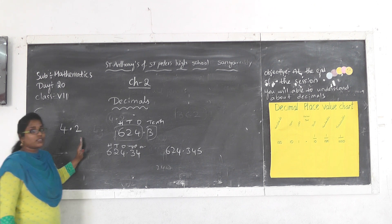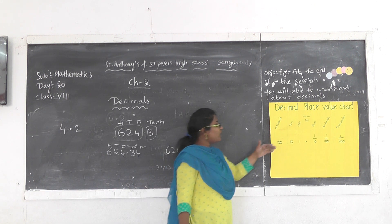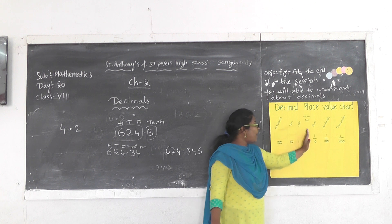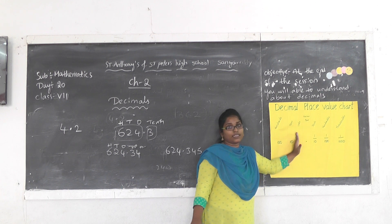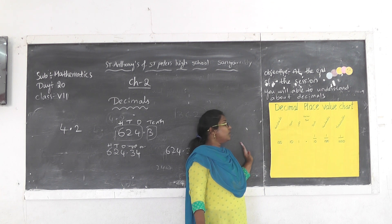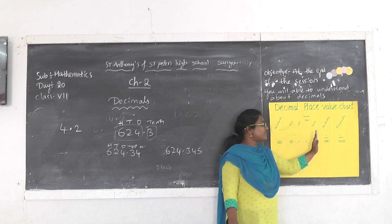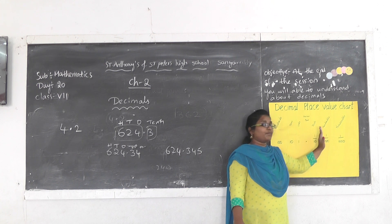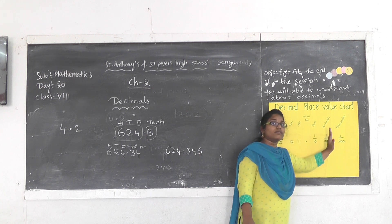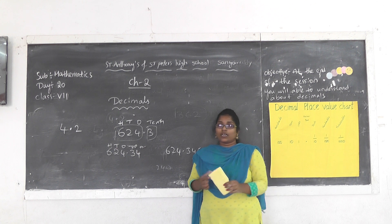What is the place value of decimal? Decimal point left side: 1, 10, 100, 1000. Decimal point right side: 1/10, 1/100, 1/1000.